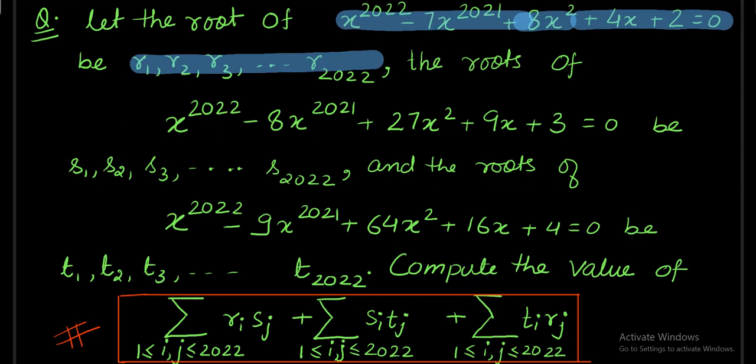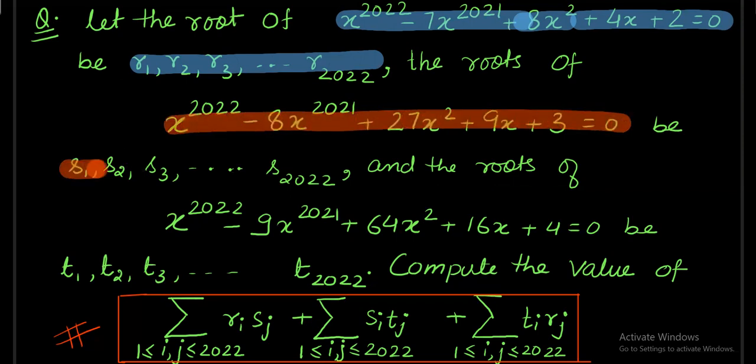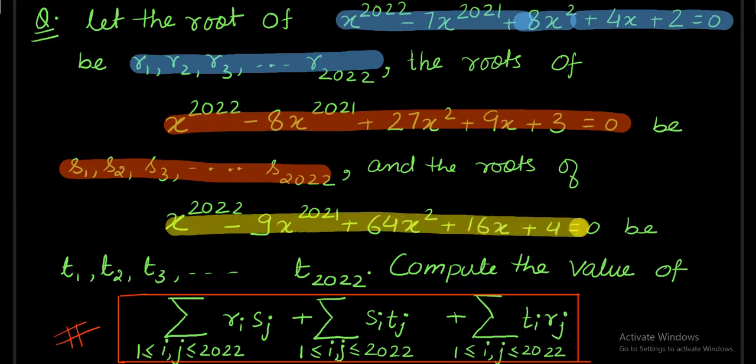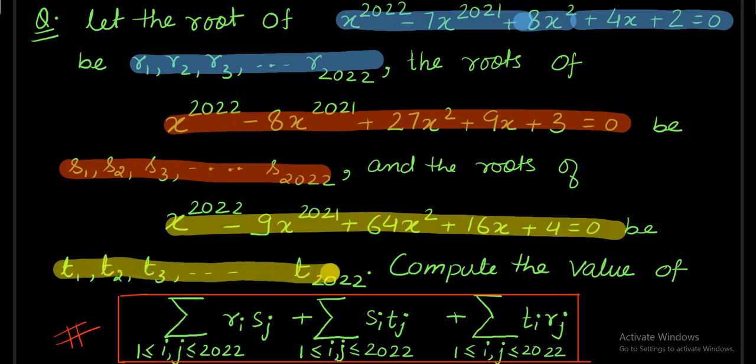And then we also have the third equation, again a polynomial equation of degree 2022 with roots t_1, t_2, t_3 up to t_2022. So basically till now we have seen that in the question they have written three polynomial equations of same degree with their respective roots in the form of r_i, s_i, and t_i.